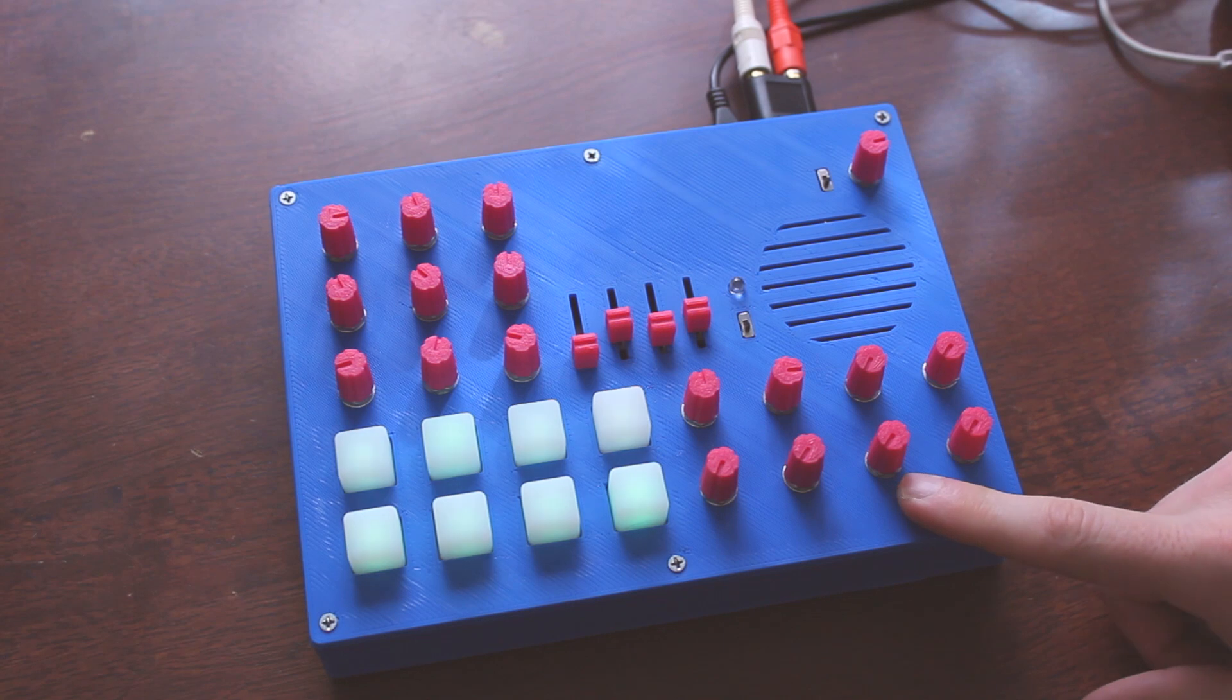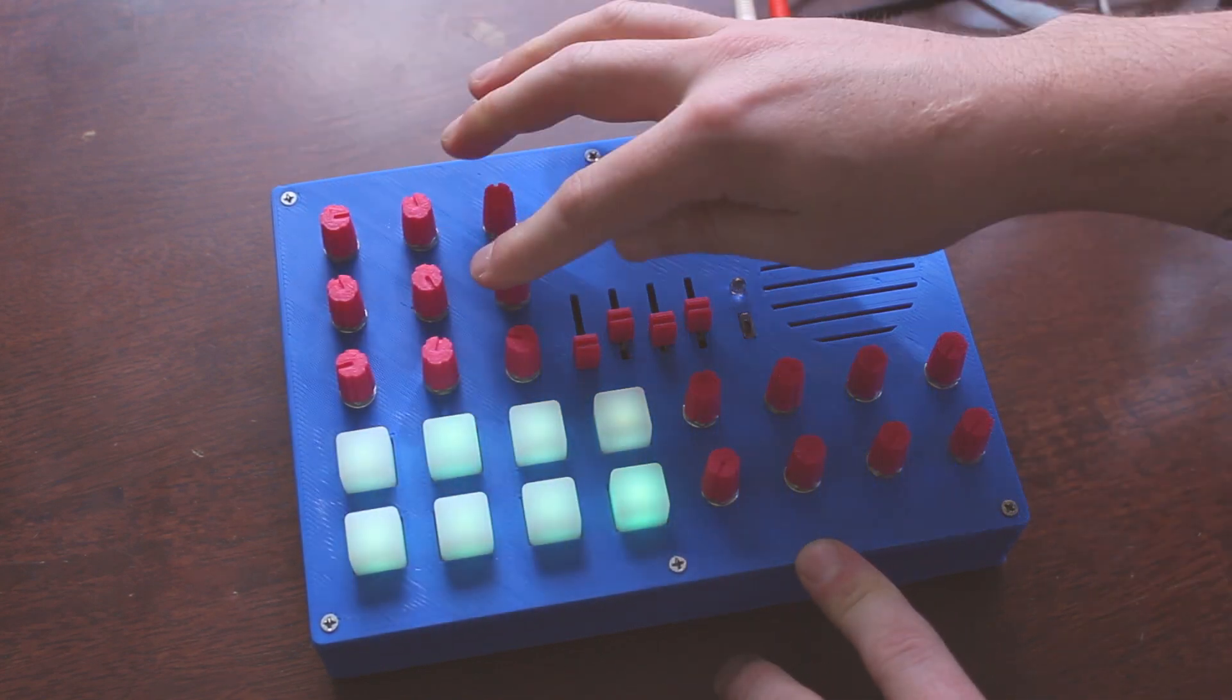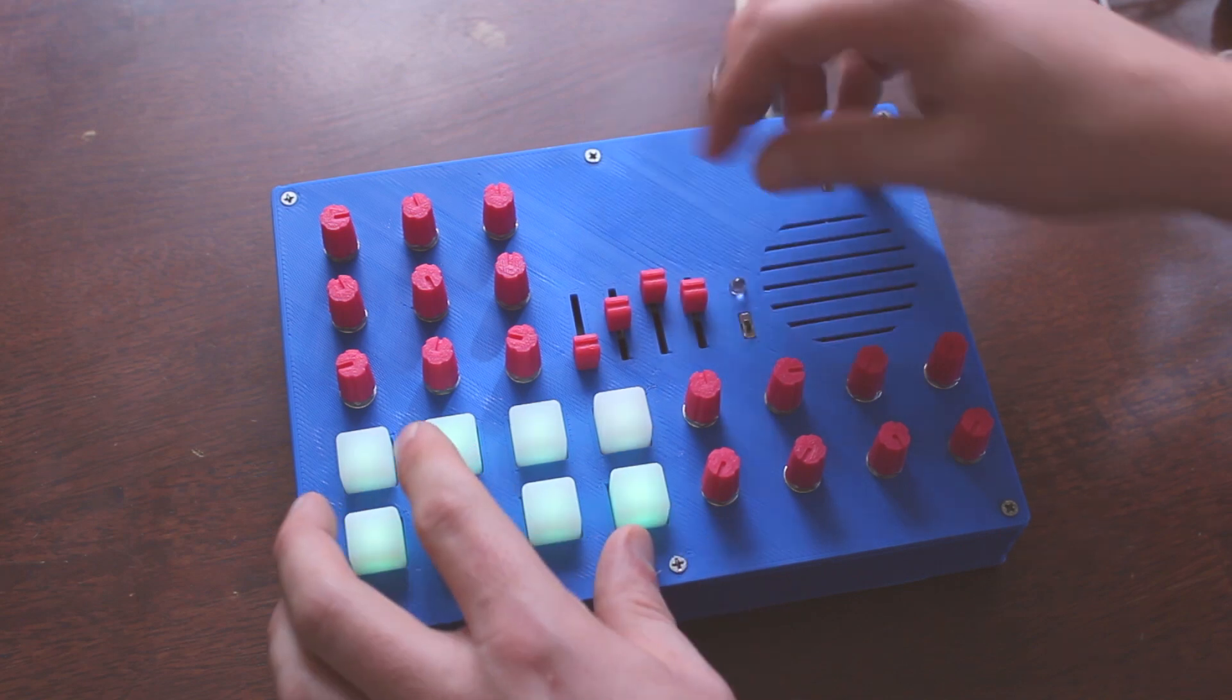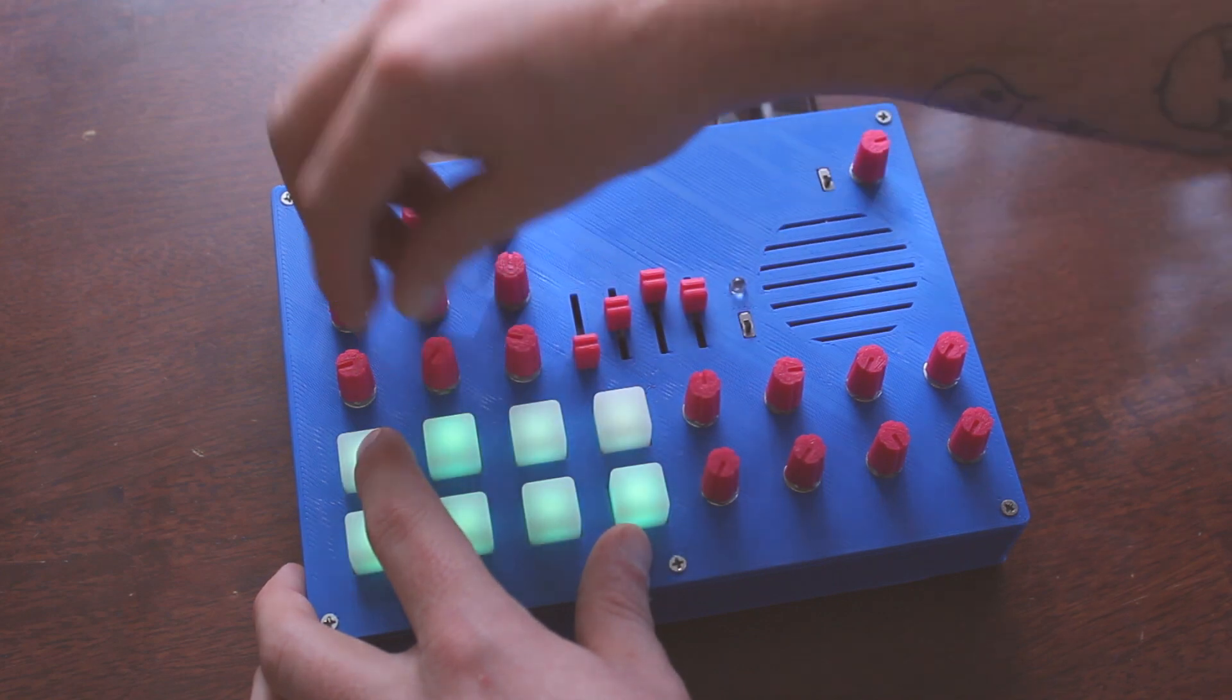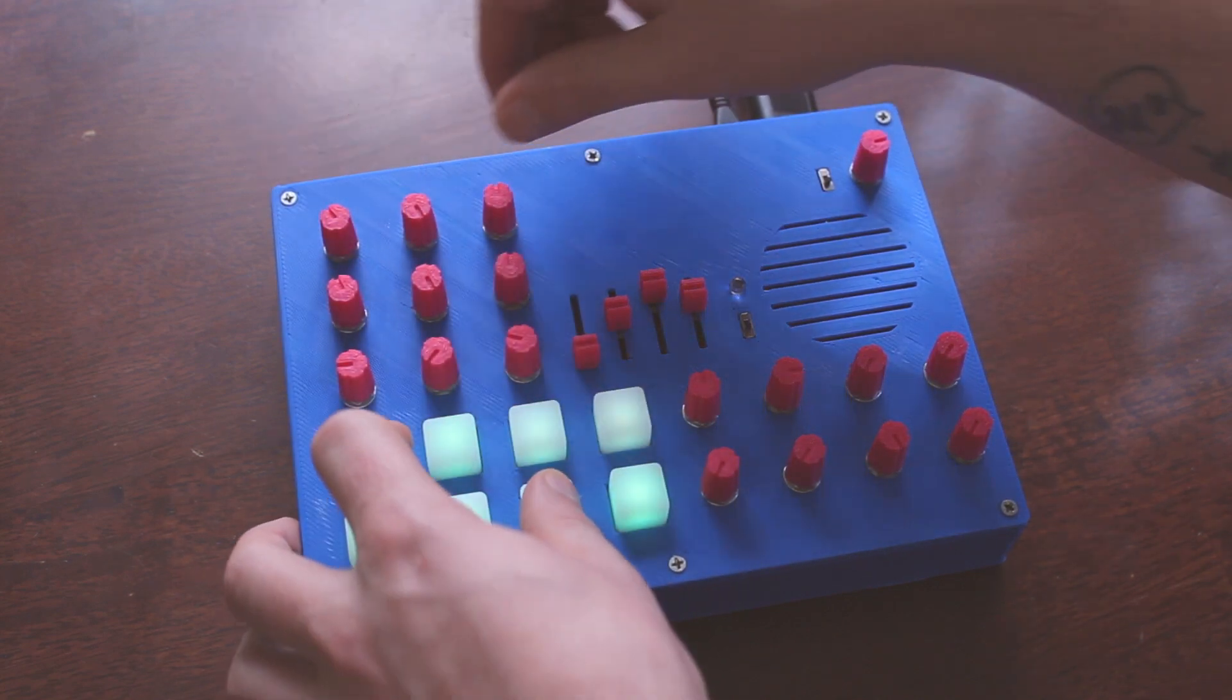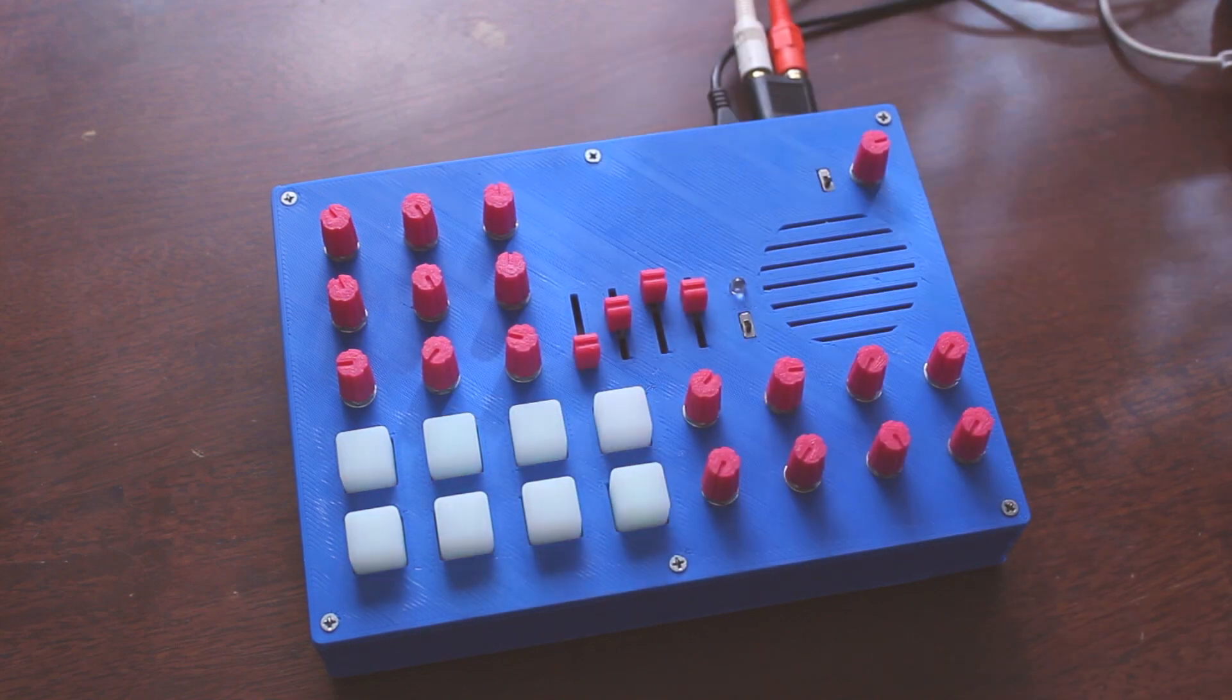All right. This knob deals with the LFO, and it kind of has two functions, which I might eventually change. It's a little confusing right now. Right now, if your second voice is set to pulse width, it'll do pulse width. Let's bring that all the way in. Let's bring this guy up. So, it's just pulse width modulation there. I'll bring my second one. And that'll do pulse width for both the first and second voice.